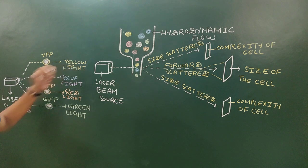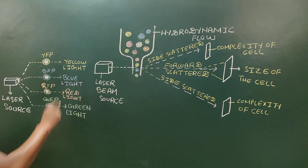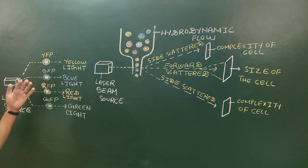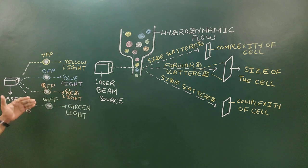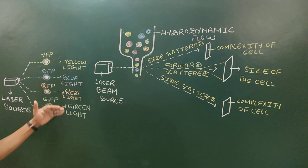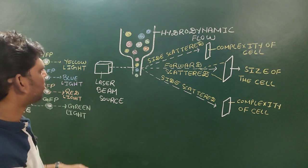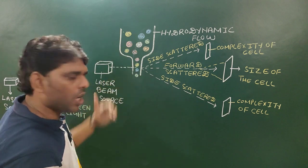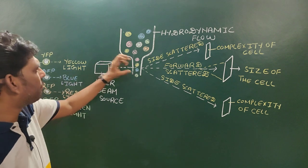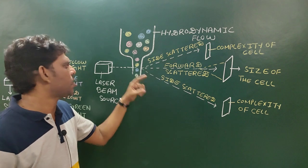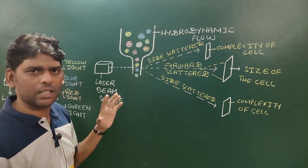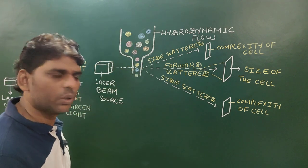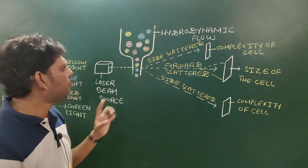When these cells tagged with different fluorescent proteins interact with the laser beam, they get excited and emit different kinds of fluorescent light. The cell tagged with yellow fluorescent protein emits yellow light, the cell with blue fluorescent protein emits blue light, the cell with red emits red light, and the cell with green emits green light. By using hydrodynamic flow, cells come through the column and when they interact with the laser beam, the emission of different kinds of fluorescent light is an indicator of different types of cells. If four types of fluorescent light are emitted, it means the cell mixture contains four types of cells.